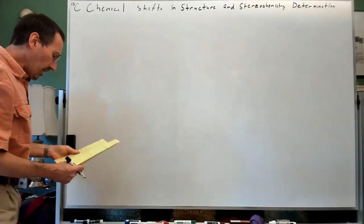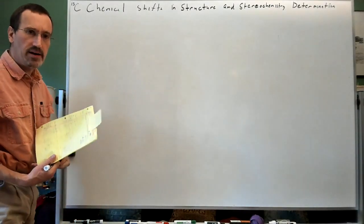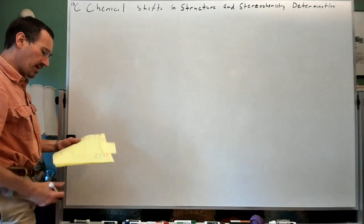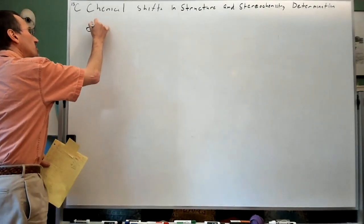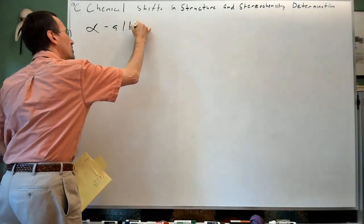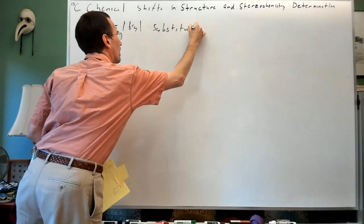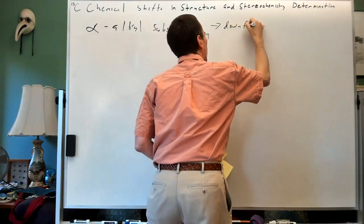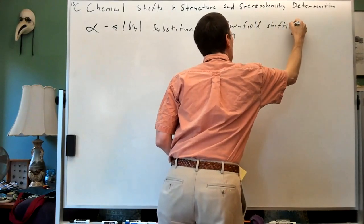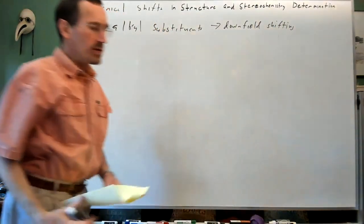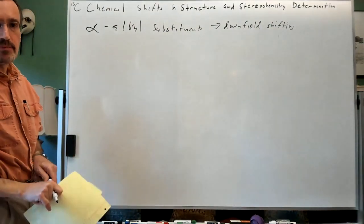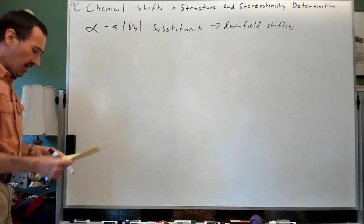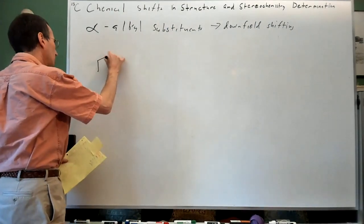I want to now talk about some effects we haven't discussed in carbon NMR — substituent effects that you might not think would make a big deal, but they sure add up. Alpha-alkyl substituents lead to downfield shifting. This is somewhat like what you see in proton NMR, where a methyl group appears at 0.9 ppm, a methylene at 1.4 ppm, and a methine at about 1.8–1.9 ppm. But in C13 NMR, these effects really add up because we also see beta and gamma effects.